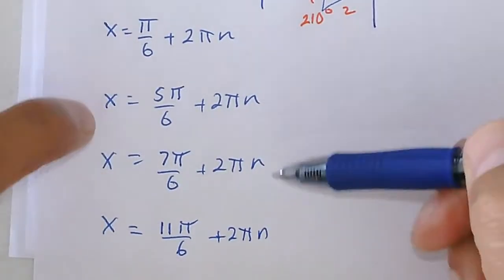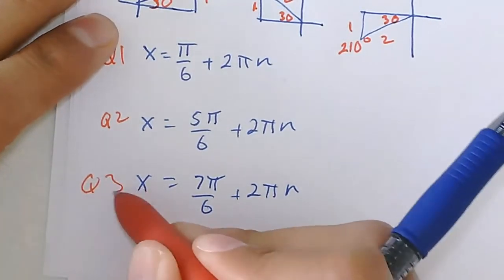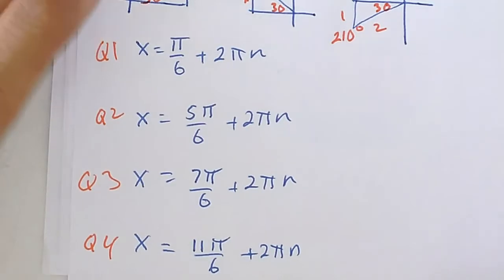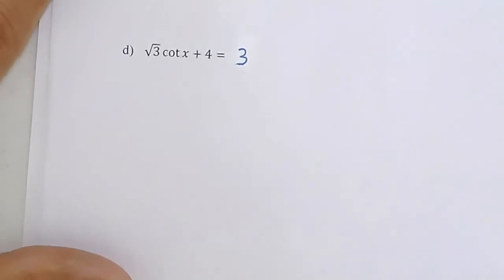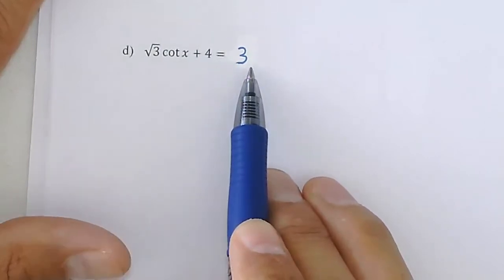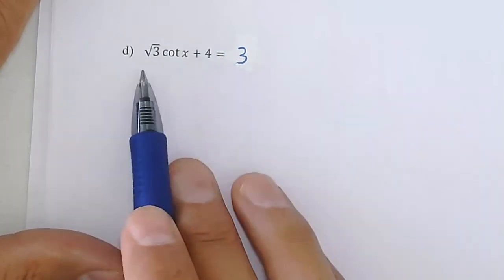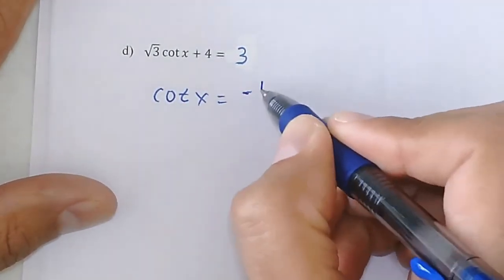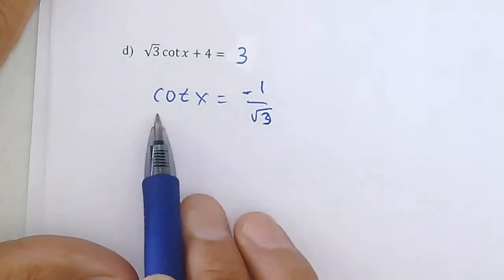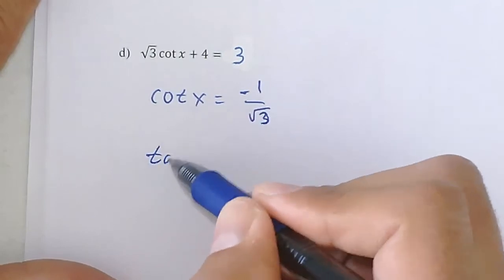The next one: √3·cot(x) + 4 = 3. Pause and solve for cotangent, then come back. You subtracted 4 and divided by √3, giving cot(x) = −1/√3. Since I prefer to work with tangent, I take the reciprocal: tan(x) = −√3. Now, tangent is negative — think about the quadrants: tangent is negative in quadrant two and quadrant four.